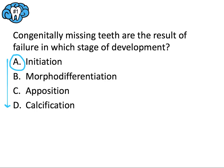If there was a problem with morphodifferentiation, we'd have a big or malformed tooth, like a peg lateral. If something happened in apposition, we might have a structural abnormality like hypoplasia. And if something happened in calcification, we'd have a more minor structural abnormality like fluorosis. So the only viable answer is A — initiation.